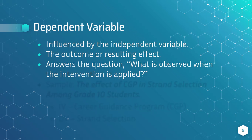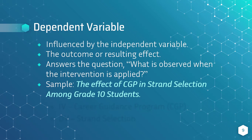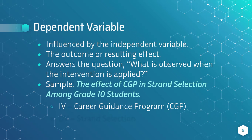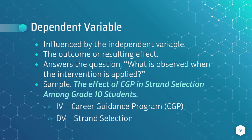For example, say we have a research title: 'The Effect of CGP and Strand Selection Among Grade 10 Students.' The independent variable will be CGP or Career Guidance Program, and the dependent variable is the strand selection of grade 10 students.